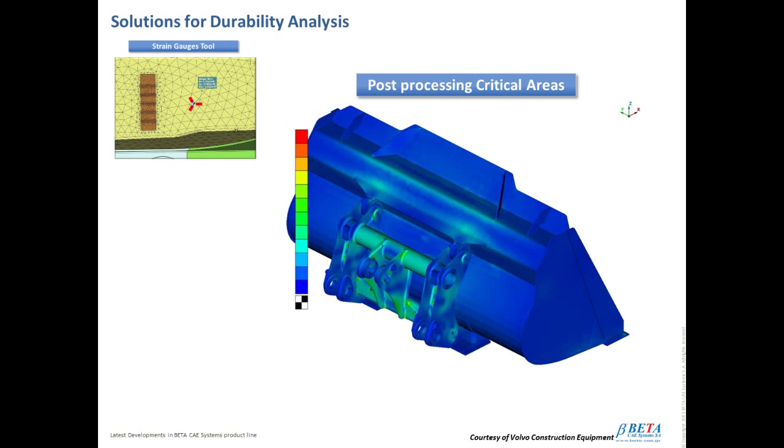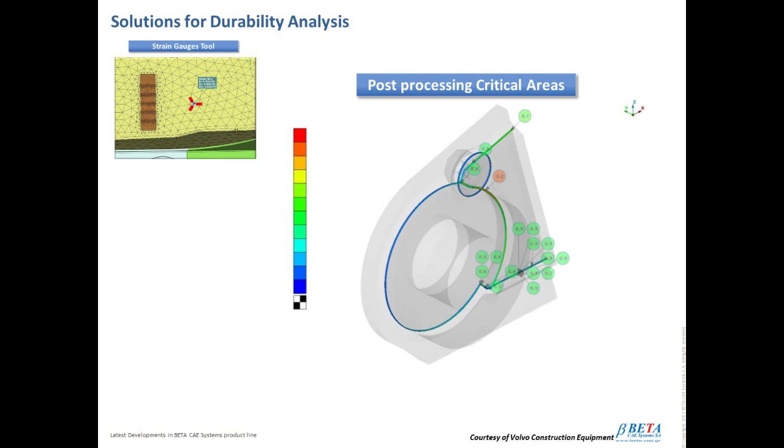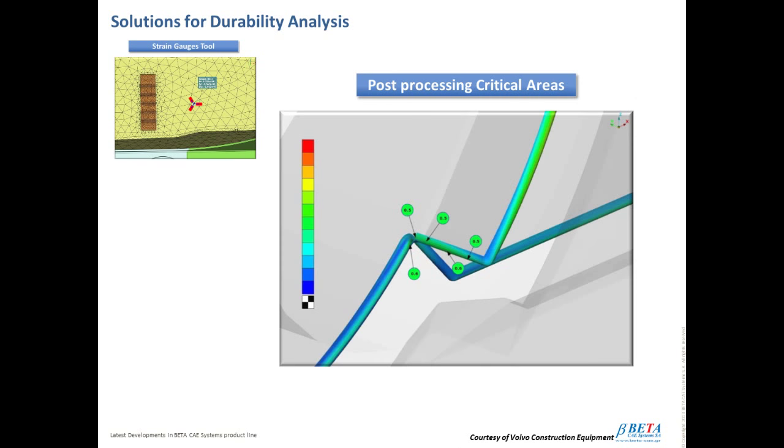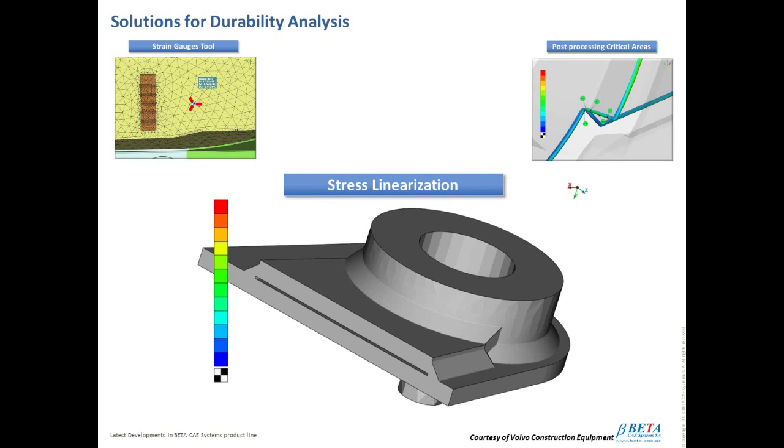Moreover, a new toolbar is introduced that helps in post-processing of critical areas or inner areas of complex structures. The toolbar guides the user to easily set fringe colors to specific groups while automatically setting transparency to the rest of the model. Creation and handling of annotation in critical areas and more is also guided through the toolbar, providing an easier and faster post-processing.